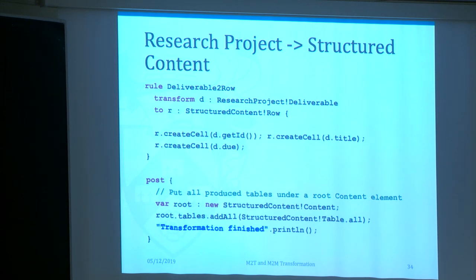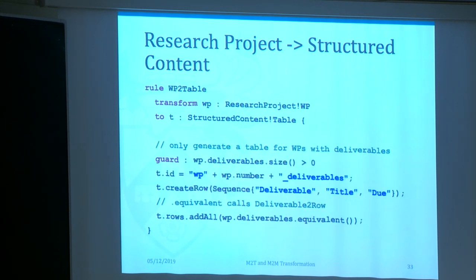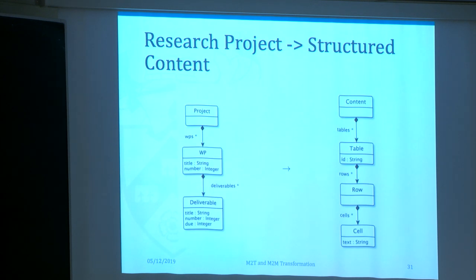The DeliverableToRow rule transforms every deliverable into one row in the output model — with one cell for its ID, one for its title, and one for its due date. ETL, like EVL and EGX, supports a post block that runs after all rules have executed. In the post block, we create a new content element in the structured content model and add all the tables we've created under it. The equivalent() operation automatically finds the right rule by looking at the type of the collection — it knows the elements are deliverables and finds the rule that can transform deliverables into something in the target model.